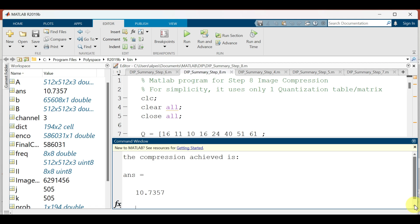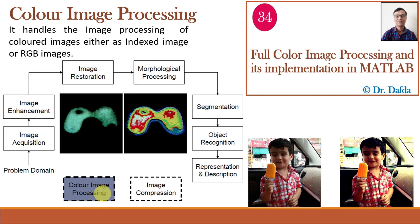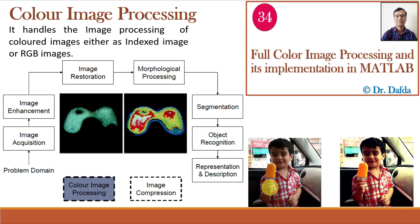Last but not the least is color image processing, which we all like to do nowadays on our smartphones by applying different filters to enhance and attract. Color image processing handles colored images either as indexed images or RGB images. It can be of two types: pseudo-color or false-color image processing, where we assign false colors to grayscale images for better analysis as shown in a medical image, or full-color image processing, where we apply different processes on the color image. This enhanced color image is obtained by increasing the red color proportion of the original image. Let us implement this in MATLAB.